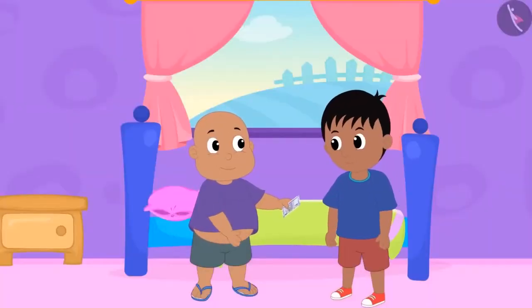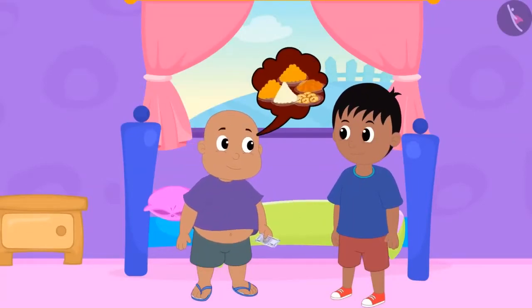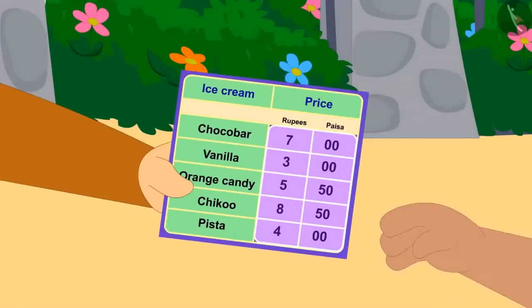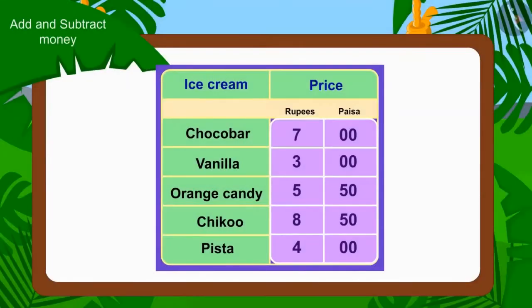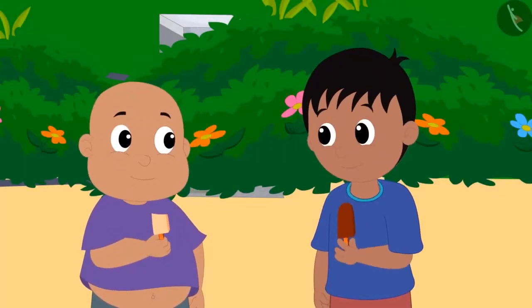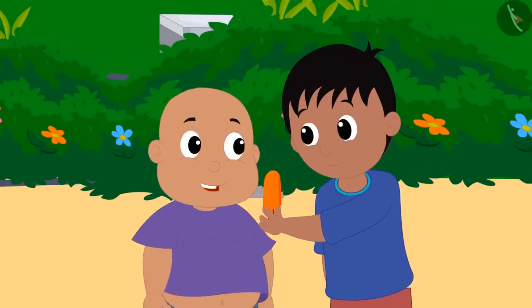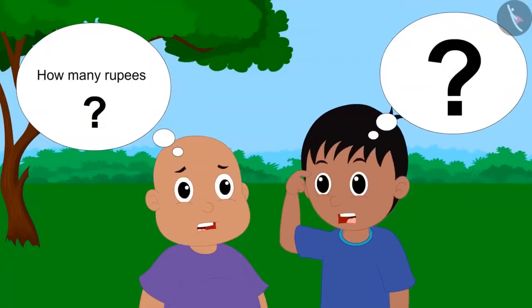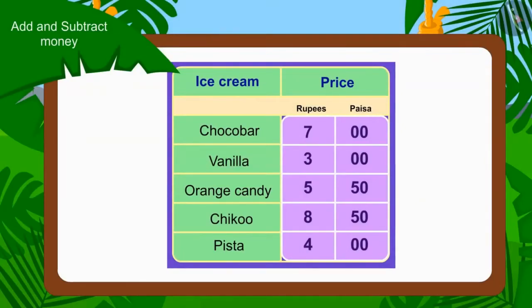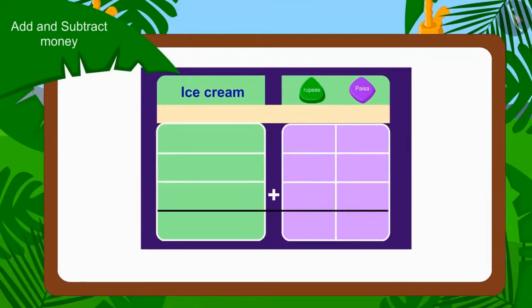Raju and Bablu together have collected Rs. 100.00. Both of them decided to eat delicious things today with that money. Both have come to Babban's ice cream stall first. Babban handed them the menu card of his stall, which has various ice cream names and their prices. Raju and Bablu first ate one Choco Bar ice cream and one vanilla ice cream, then shared one orange candy. Now they are thinking how much they have to pay Babban. Kids, let's solve it together — to find the total amount, we need to add the prices of all three ice creams.